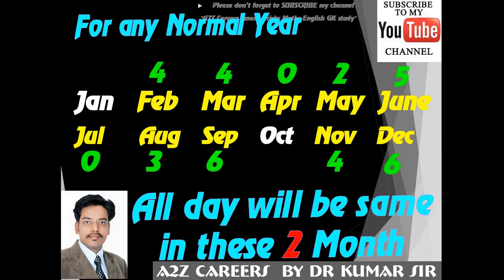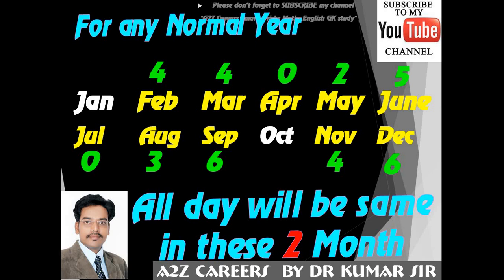Now I will tell you about months that share the same day in a normal year. As we know the month codes — square of 12 (144), square of 5 (025), square of 6 (036), and 12 square plus 2 (146). In a normal year, January and October have the same code, so whatever the day on 1st January 1947, the same day will be on 1st October 1947. In any normal year — like 2011 or 2013 — January and October will always have the same days.